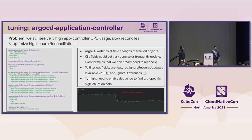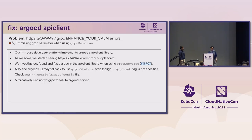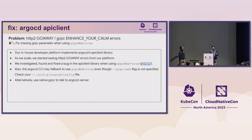Last but not least, about the API client. Our in-house developer platform implements the Argo CD API client library. As we scaled, we started seeing HTTP/2 GOAWAY errors from our platform. We investigated and fixed a bug in the API client library when using gRPC-web mode, as shown in the referenced GitHub issue. Also note that the Argo CD CLI may fall back to gRPC-web mode even without specifying the flag — you may want to check your `~/.config/argocd/config` file. Alternatively, using native gRPC avoids this bug entirely.